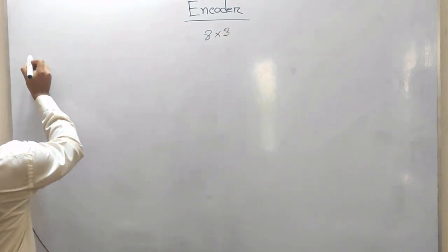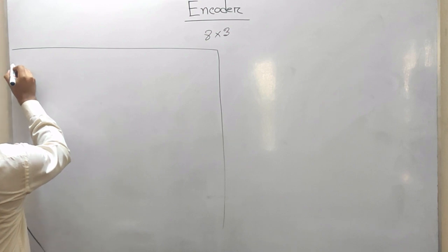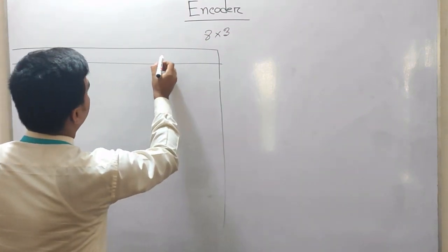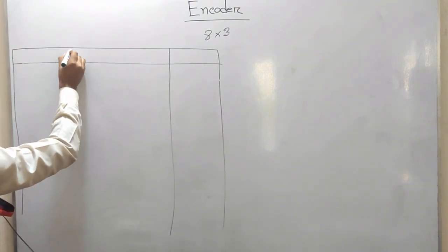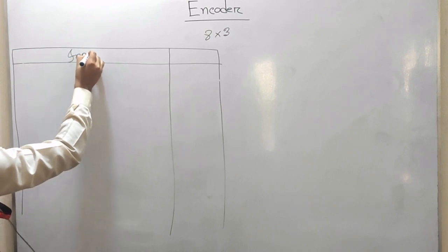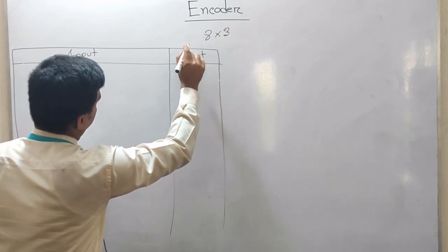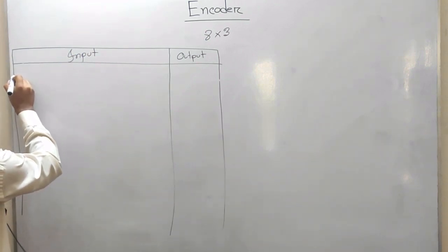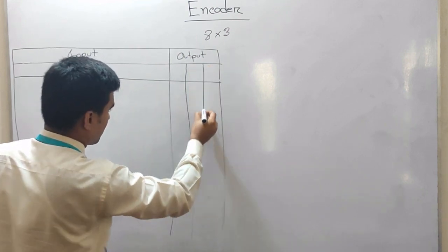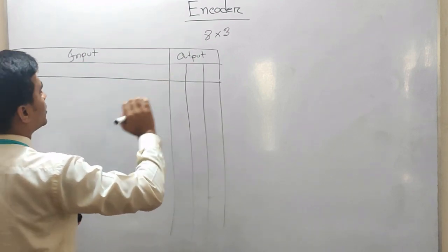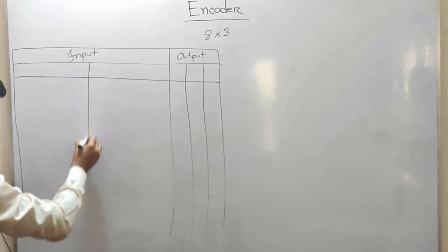The 8-to-3 encoder has a total of 8 input lines. There are 8 inputs and corresponding outputs. This is the basic structure of the 8-to-3 encoder with its input and output lines.